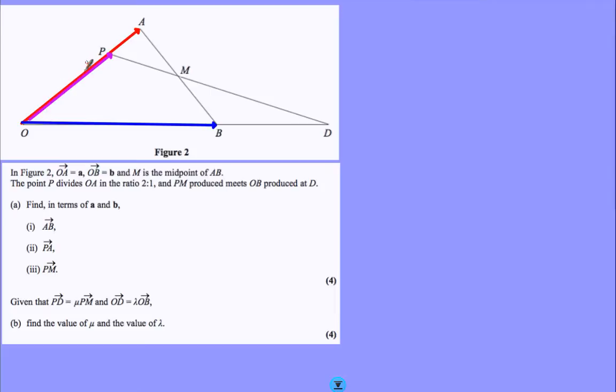Start and label what you know. O to A is A, O to B is B, and we have P splits O to A in the ratio 2 to 1. 2 to 1 is thirds, 2 thirds and 1 third. Label up.